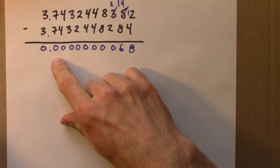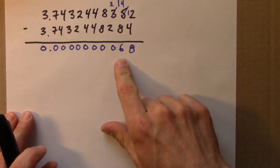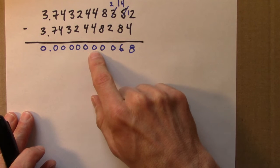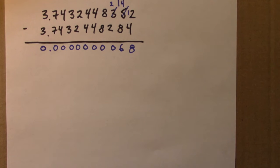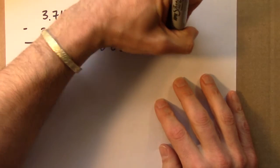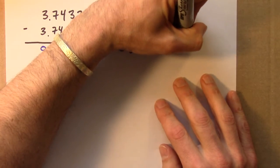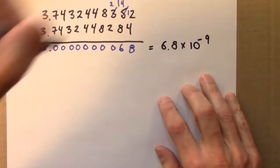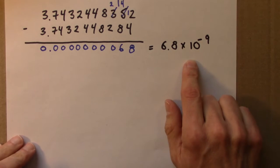Let's put in scientific notation that may be helpful. 1, 2, 3, 4, 5, 6, 7, 8, 9. So this is 6.8 times 10 to the minus 9. A tiny, tiny, tiny range.